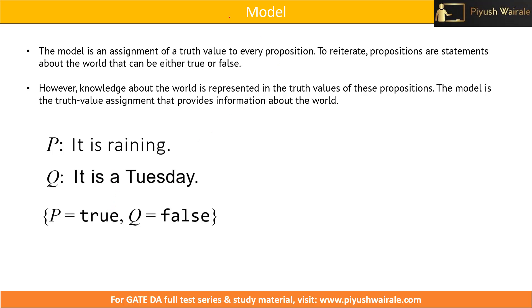Let us start with the model first. Up till now, we have discussed propositions P and Q — we know they are true or false, and based on that we can make inferences or draw conclusions by reading sentences and using propositional logic. As a human, I can directly come to a conclusion, but how will AI come to know whether a particular proposition is true or not? If this is true, then the negation of this proposition will be false — but how will AI determine that? For that, there is a model.